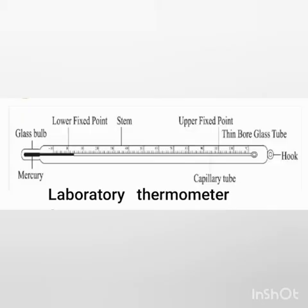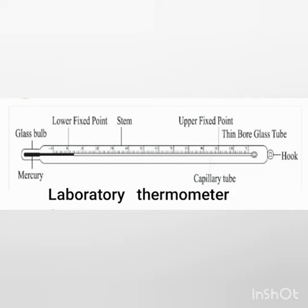Next is the laboratory thermometer. It is used for measuring temperatures other than the human body. It consists of a long thin glass tube with a small bulb filled with mercury, with a temperature range of minus 10 degrees Celsius to 110 degrees Celsius. There is no kink, so mercury falls back into the bulb as soon as it is removed from the hot object. Temperature must be read while keeping the thermometer in contact with the object. It is used in scientific and pharmaceutical laboratories.